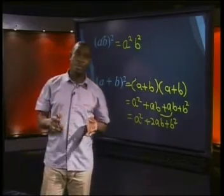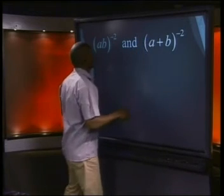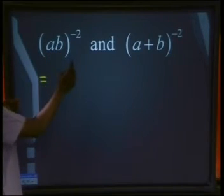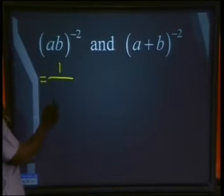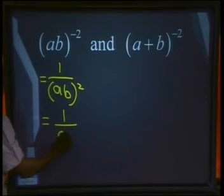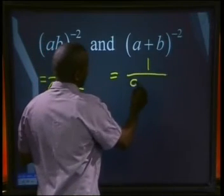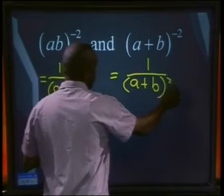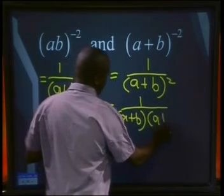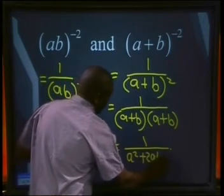Let's do the same example using negative exponents. We have ab all to the power of minus 2, and a plus b all to the power of minus 2. Remember our definition: anything to a negative power can be written as 1 over the expression to the positive power. So ab to the power of minus 2 becomes 1 over ab squared, which we write as 1 over a squared b squared. Applying the same to the second expression: 1 over (a plus b) squared, which equals 1 over a squared plus 2ab plus b squared.